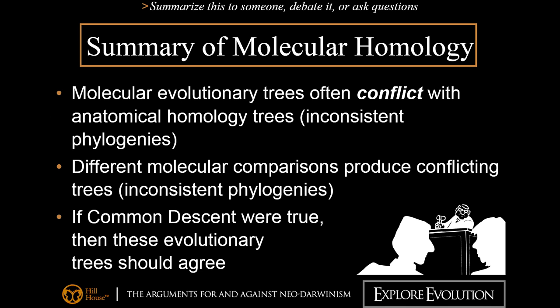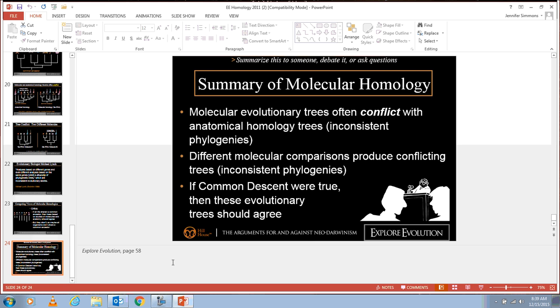A summary of this argument: molecular trees often conflict with trees produced based on anatomy, and even different molecular comparisons produce inconsistent results. Because of these inconsistencies, the question remains: do those similarities really reflect common ancestry? This concludes Lecture 5.